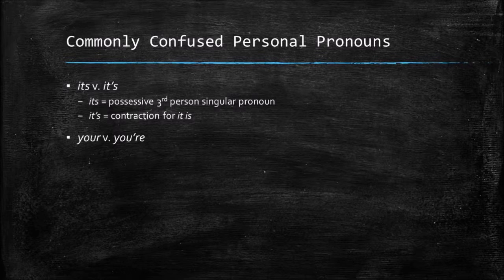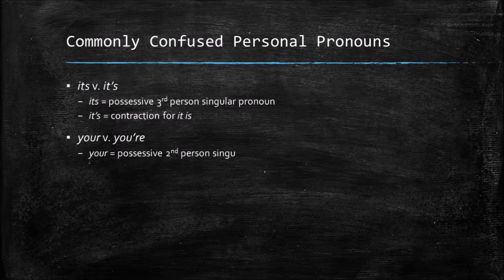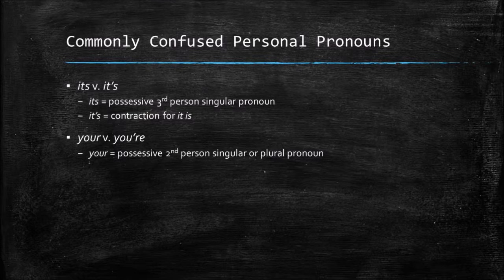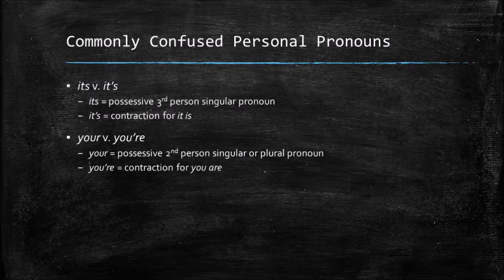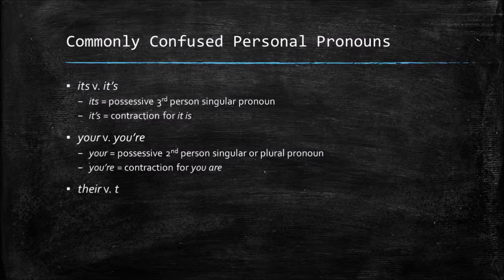Your versus you're: 'your' without the apostrophe is your possessive second-person singular or plural pronoun — because 'you' is both singular or plural depending on how it's used. 'You're' with the apostrophe RE is a contraction for 'you are.'